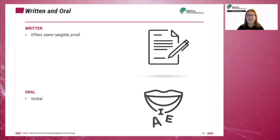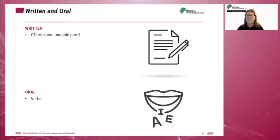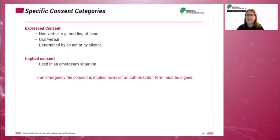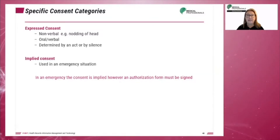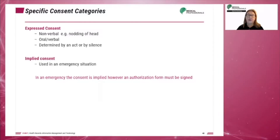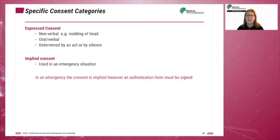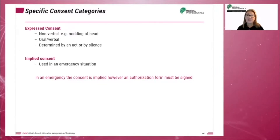Oral consent can be verbal — it is just as binding but difficult to prove. In addition to general consent, there is expressed consent, which can be a non-verbal act such as nodding of the head or holding out the arm when told an IV is needed. Expressed consent can also be oral, such as a simple yes if asked a question like, 'Is it okay for me to take your blood?' Expressed consent could also be determined by silence, such as not objecting when a nurse starts looking for an appropriate vein.